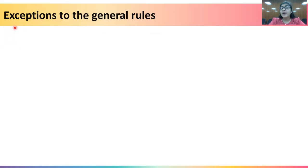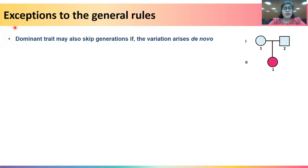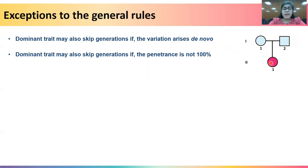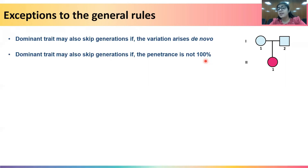Biology is full of exceptions. We have learned that dominant traits never skip generations, but this is not always the case. A dominant trait may skip a generation if the variation arises de novo — that is, the variation was not present in either parent and suddenly appears in a child — which can happen when a variation is introduced in the gamete just before fertilization or during embryogenesis. A dominant trait can also skip a generation if penetrance is not 100%. This is well-characterized in inherited cardiac disorders such as cardiac channelopathies and cardiomyopathies, where a parent carrying the defective allele may be unaffected while a child carrying the same allele is affected.